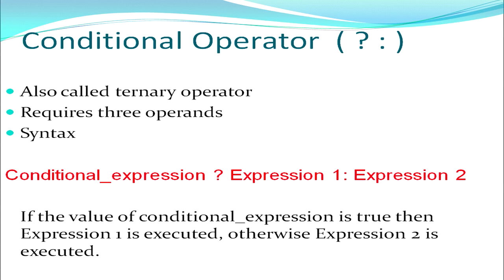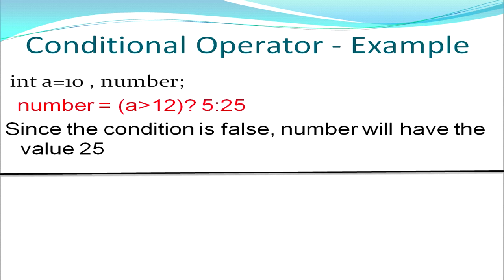Then we have the conditional operator — the only ternary operator used in C++. It is called ternary because it requires three operands. As shown in the syntax, the first operand is the expression followed by a question mark (?), the second operand is the expression executed if the condition is true, and the third operand is the expression executed if the condition is false. In the first example, number will be assigned 5 if a is greater than 12, and 25 otherwise.